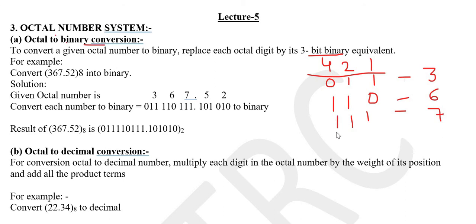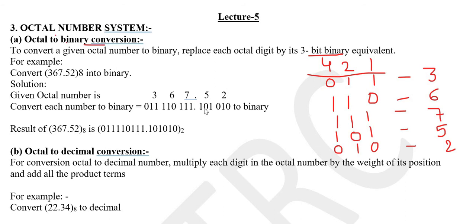For 5, we get 4 plus 1, so the 3-bit representation is 1-0-1. This is how we represent each octal digit in its 3-bit binary equivalent. This is the full representation in octal-to-binary conversion.